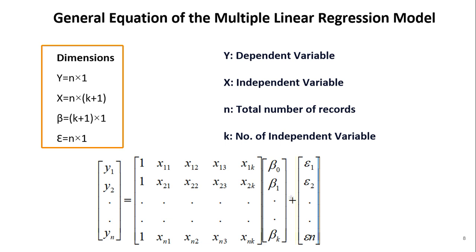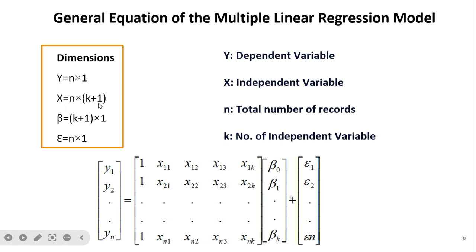This is the equation of multiple linear regression. Y is the dependent variable, X is the independent variable, N is the total number of records, and K is the number of independent variables. Y has dimension N×1, X has dimension N×(K+1) where the first column is for the intercept. The number of parameters for beta is K+1 because the first parameter is for the intercept, and the error epsilon has size N×1. You need to remember these dimensions because only the dimensions change for multivariate regression.